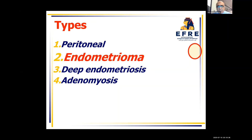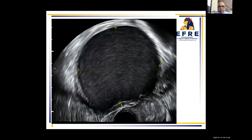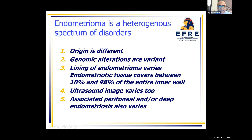Endometriosis generally is classified into four types, and our talk today is about endometrioma. The classic picture of endometrioma is a circumscribed cyst with homogenous ground glass appearance and thick wall. But endometrioma is a heterogeneous spectrum of disorders — you cannot speak about one endometrioma.